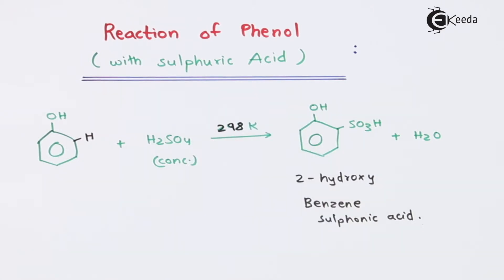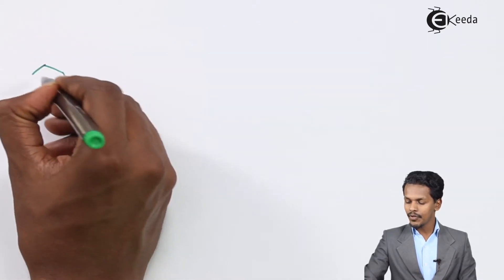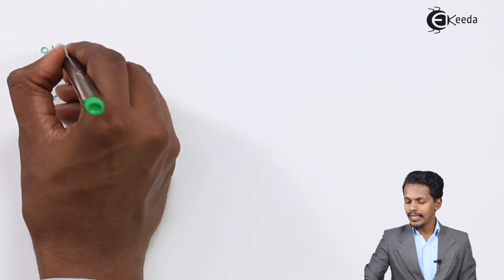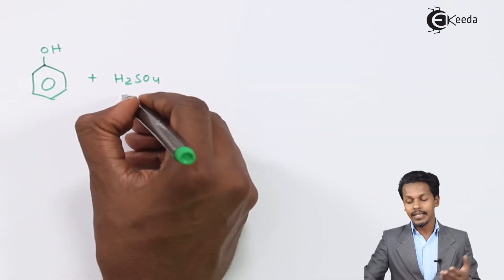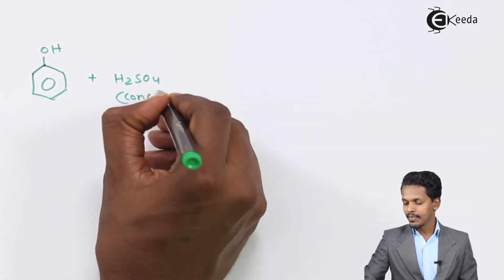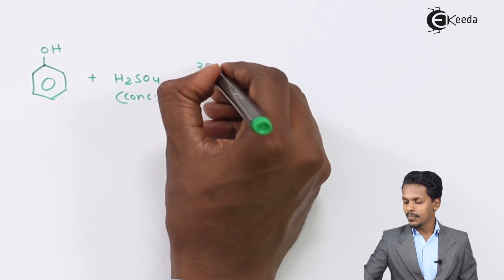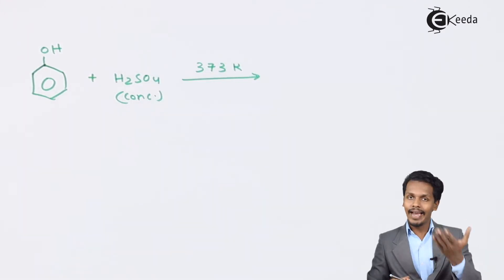At room temperature the product we obtain is the ortho product. But what happens at higher temperature? Suppose we treat phenol with concentrated H₂SO₄ at 373 Kelvin — that is 100 degrees Celsius.